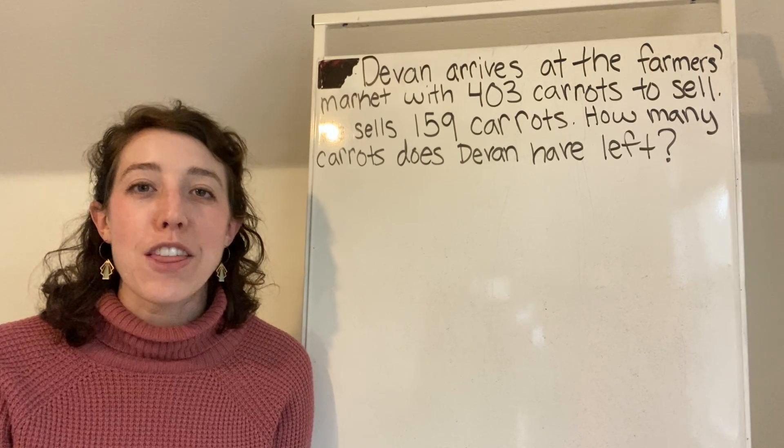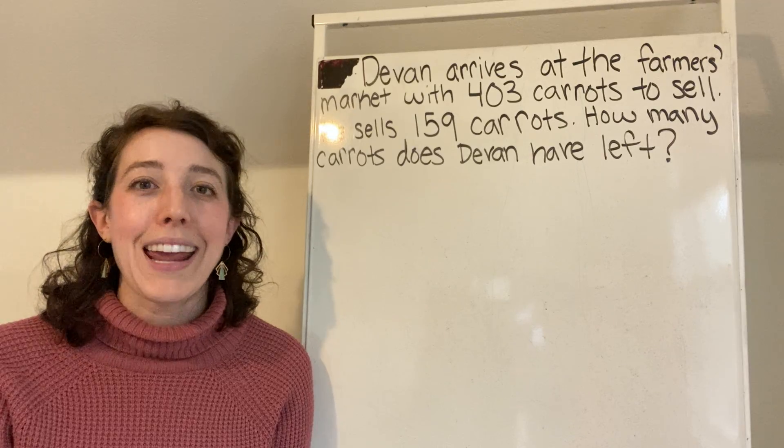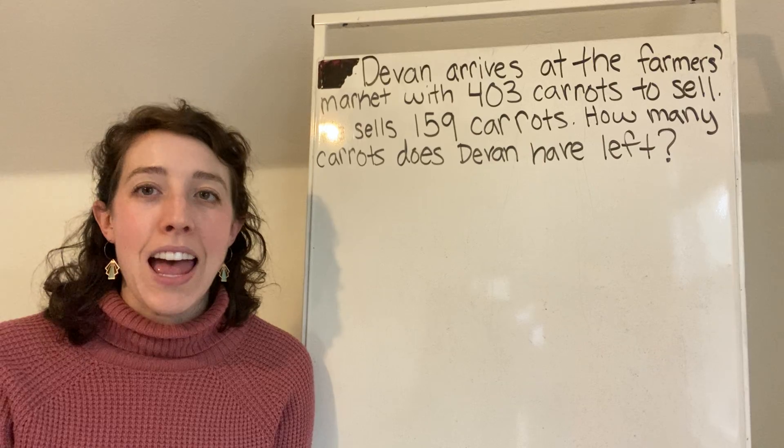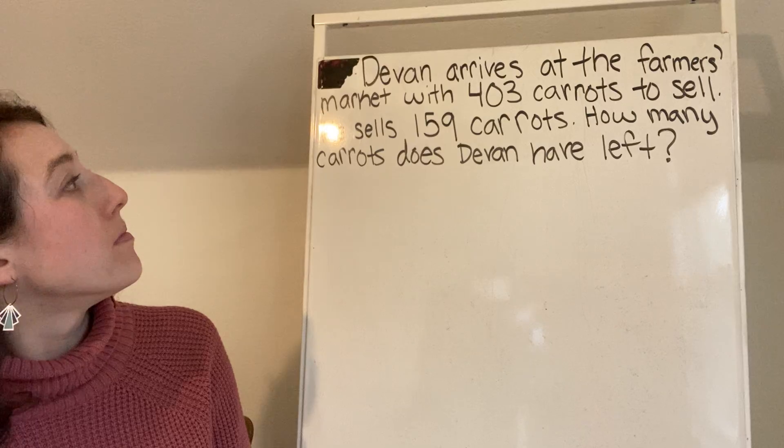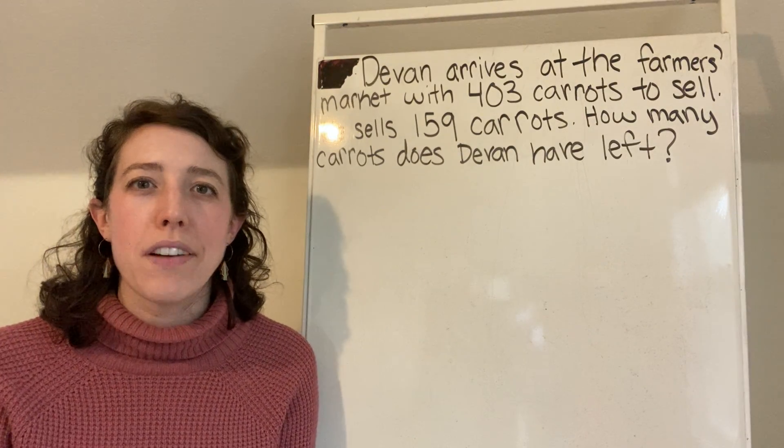Devin arrives at the farmers market with 403 carrots to sell. He sells 159 carrots. How many carrots does Devin have left?